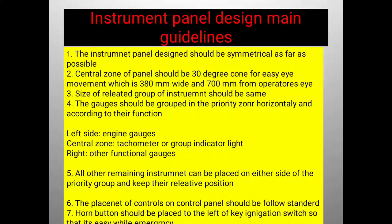On the left side, engine gauges such as pressure gauge and temperature gauge are placed. In the central zone, the tachometer or group indicator lights are placed. On the right section, other functional gauges are placed. All remaining instruments can be placed on either side of the priority group, maintaining their relative positions.